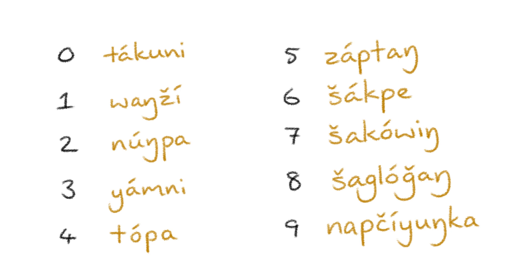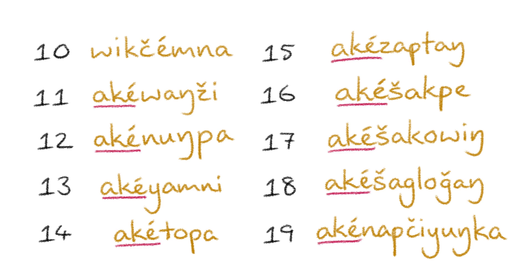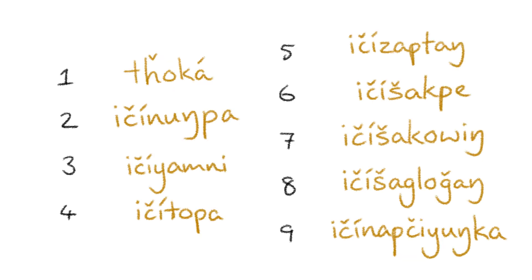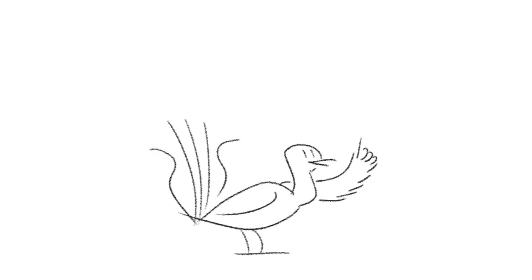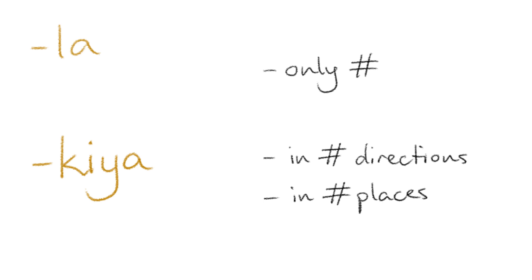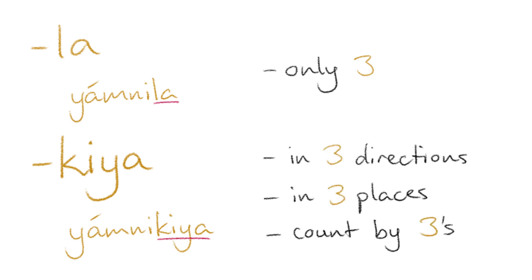Numbers. Lakota uses a decimal system for counting, and has words for the tens, hundreds, thousands, and millions values. Numbers 11 through 19 are expressed with the prefix agge, and there is also a unique word for the number 1, wanchi, which is only used for counting. Ordinal numbers are expressed through the prefix ichi, except for first, which is its own word troka. There is also the diminutive enclitic la, which when attached to numbers is used to express 'only,' and the suffix gia, which expresses a number of directional places or to count by a certain number. So, for example, yamanila means 'only three,' and yamanikia means 'in three different directions, in three different places, or to count by threes.'